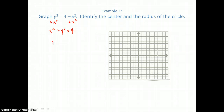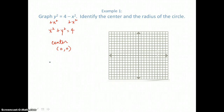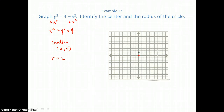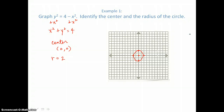To graph it, pick out the center. Since 0 is subtracted from x and 0 is subtracted from y, our center is the origin, 0, 0 — both h and k are 0. Our radius is the square root of 4, which is 2. Given this, I'll graph a center at 0, 0, then go up 2 units, left 2 units, down 2 units, and right 2 units, and draw the circle through those four points. That's the circle x squared plus y squared equals 4.